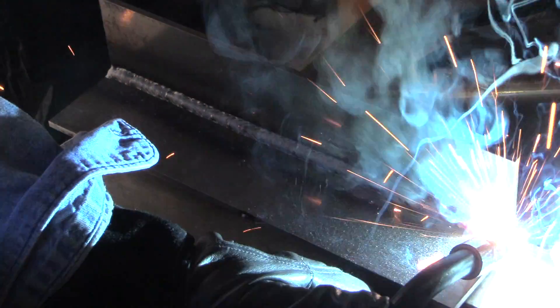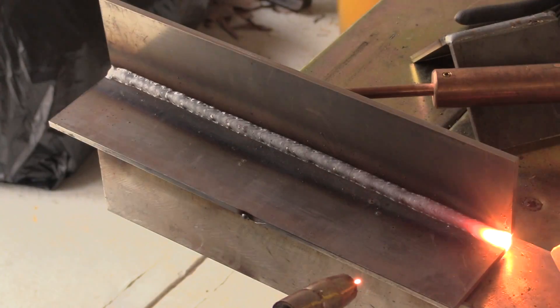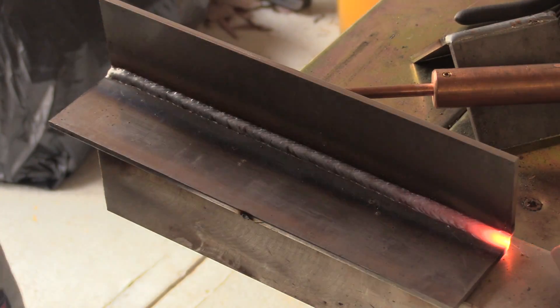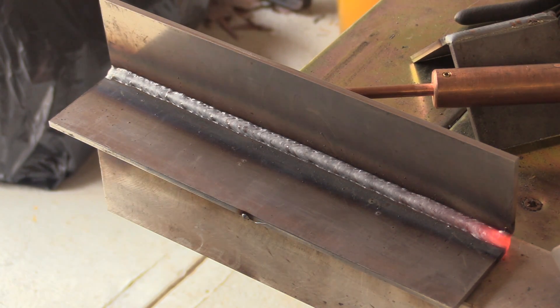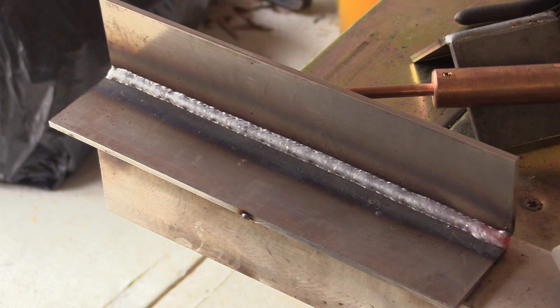So an inside corner like this, even though it's 3/16, you can definitely use a little bit hotter setting. Outside corner you just don't need quite the heat. After this cools I'm going to cut it in two places. One we're going to see what it did on the colder settings on the outside corner and then the other the hotter settings.